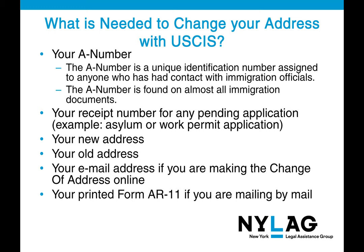What information is needed to change your address with USCIS? First, you will need your A number, or alien number — a unique identification number assigned to anyone who has had contact with immigration officials, found on almost all immigration documents. You will also need your receipt number for any pending application, such as asylum or a work permit application; your new address; your old address; your email address if making the change online; and your printed form AR-11 if doing it by mail.